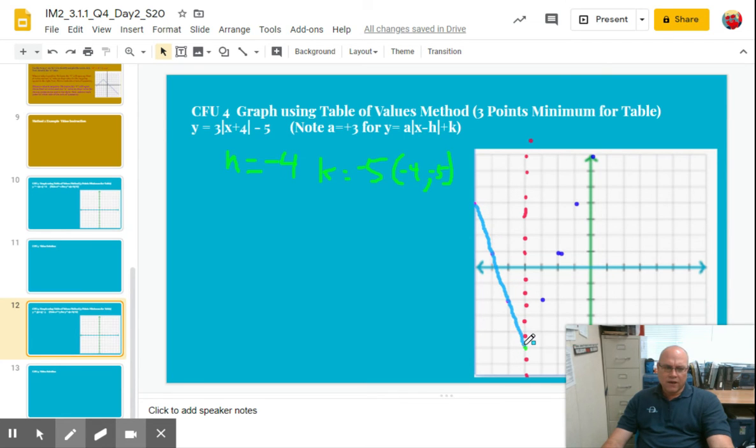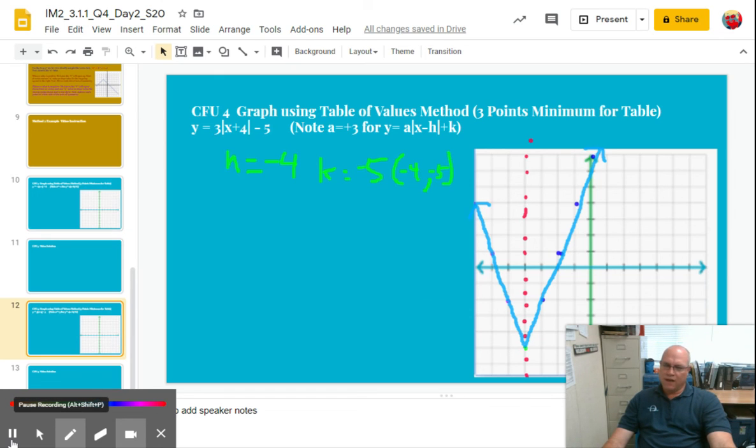I go down to here. Boing, it bounces at the vertex. And it comes up, up, up, up, and away. All right. And there it is. All right. That's it for graphing an absolute value function.